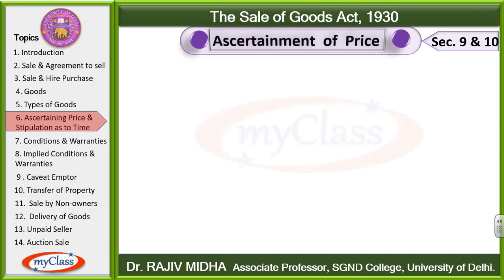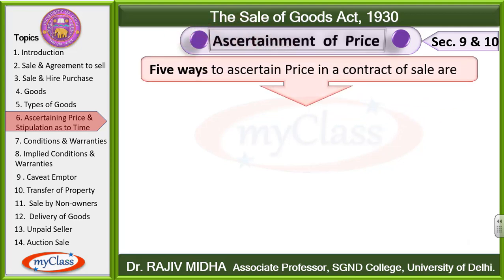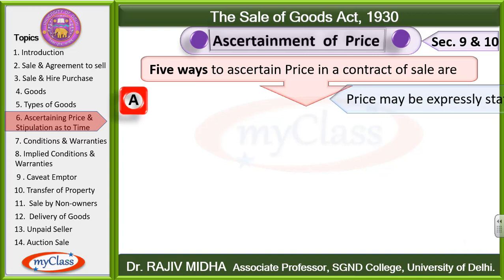First, we will talk about the ascertainment of price. There are 5 ways to ascertain price in a contract of sale.